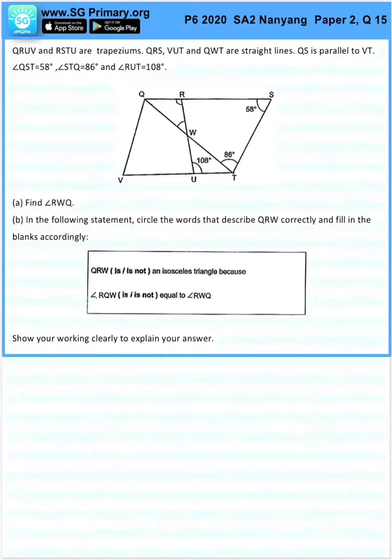Question 15. QRUV and RSTU are trapeziums. QRS, VUT and QWT are straight lines. QS is parallel to VT. Angle QST equals 58 degrees, angle STQ equals 86 degrees, and angle RUT equals 108 degrees. Find angle RWQ.